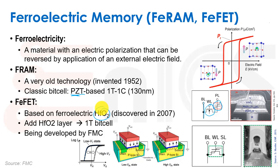Building on this, NaMLab in Dresden came out with the FeFET — taking a regular MOSFET and adding a ferroelectric hafnium oxide layer. Changing the polarity changes the VT of the cell, similar to a flash cell. This is from the last couple of years and they've spun out a company called FMC trying to commercialize it. It has a lot of advantages and may be one of the candidates that wins this competition.